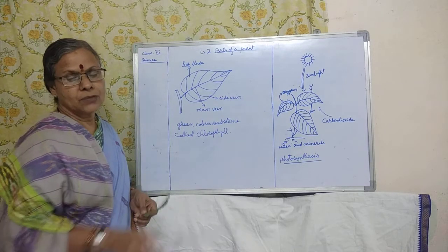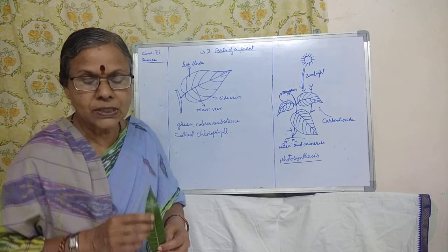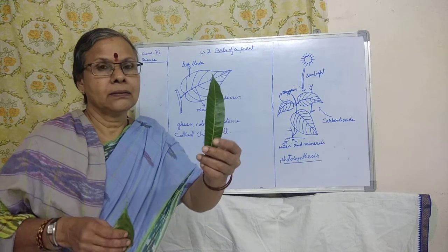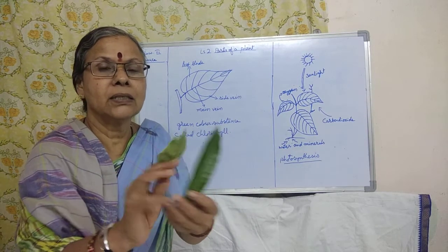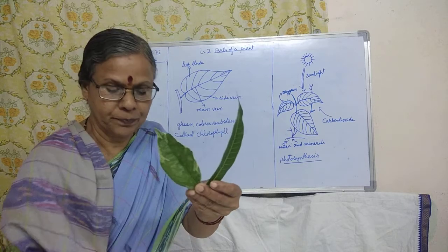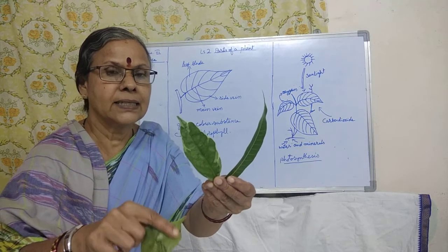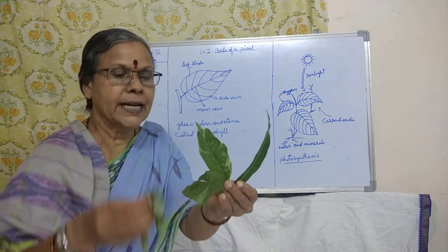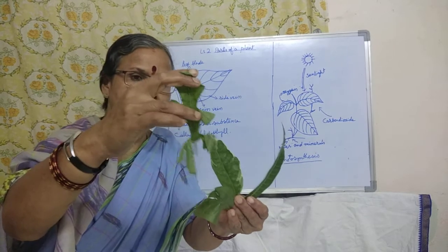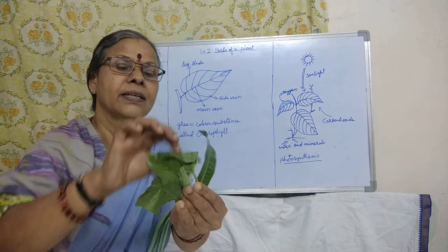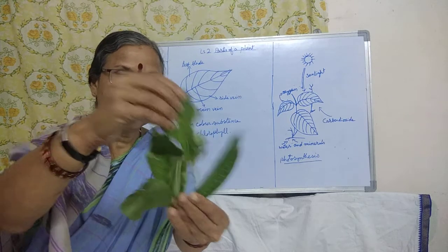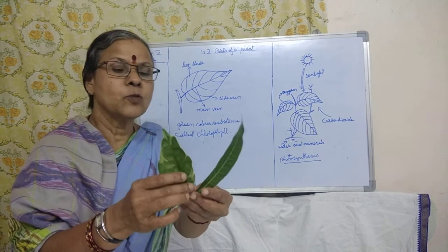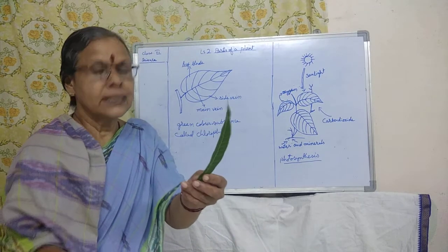Let us study what parts are there in a leaf. When you go out and observe a plant, you will not find the leaves in the same size and shape. They are all different sizes and shapes. You can see this leaf also — it is totally different. So these are the different types of leaves.